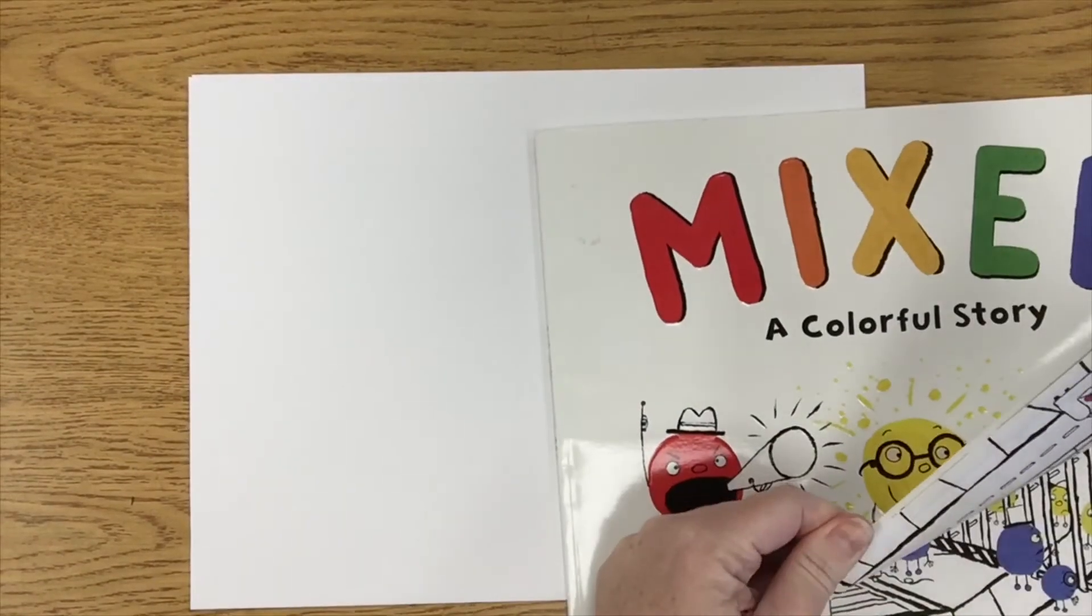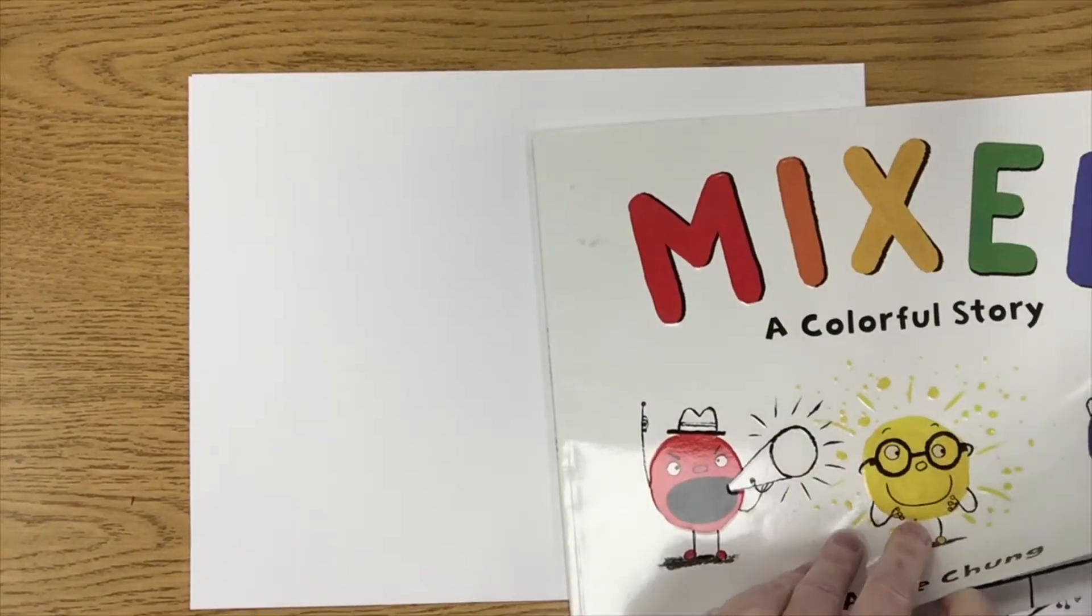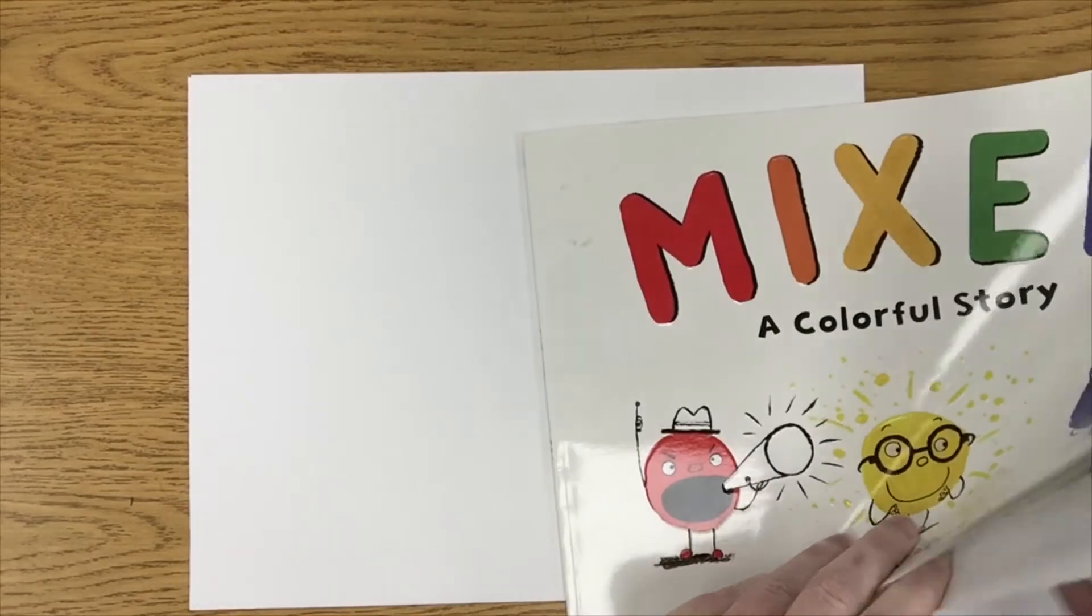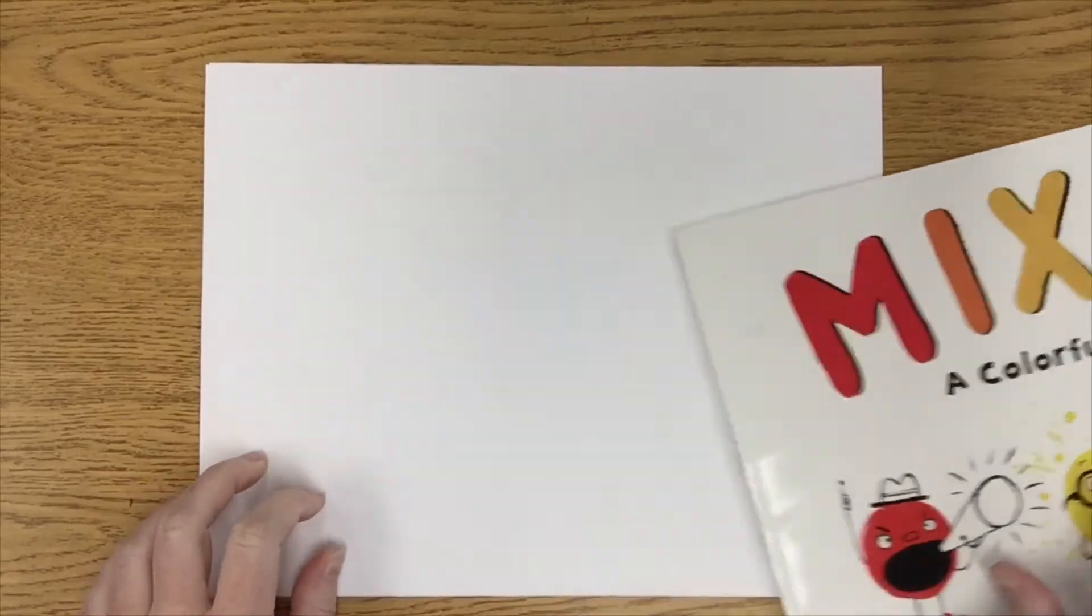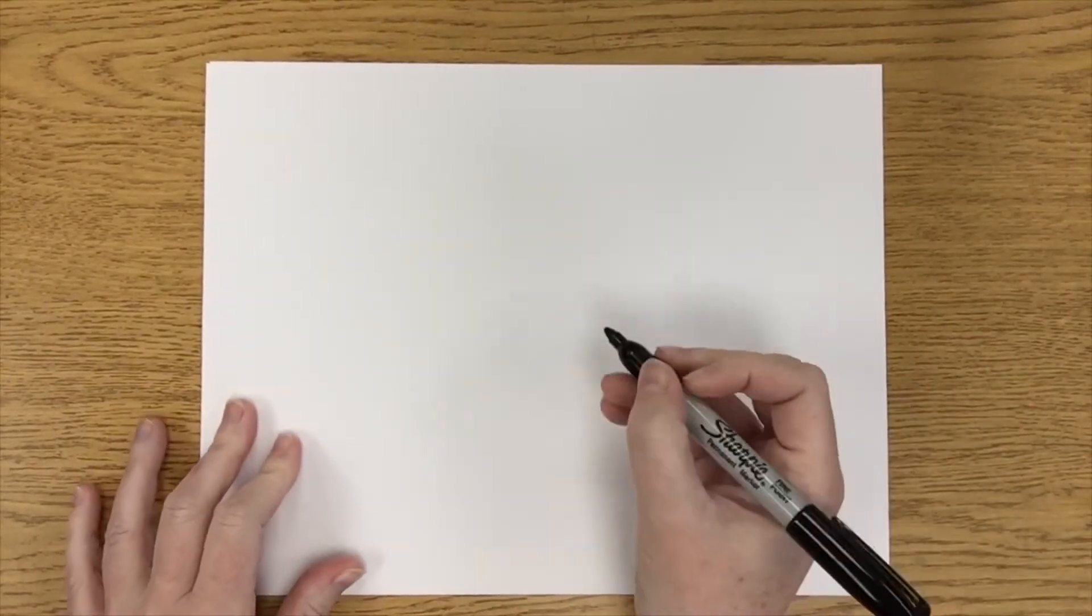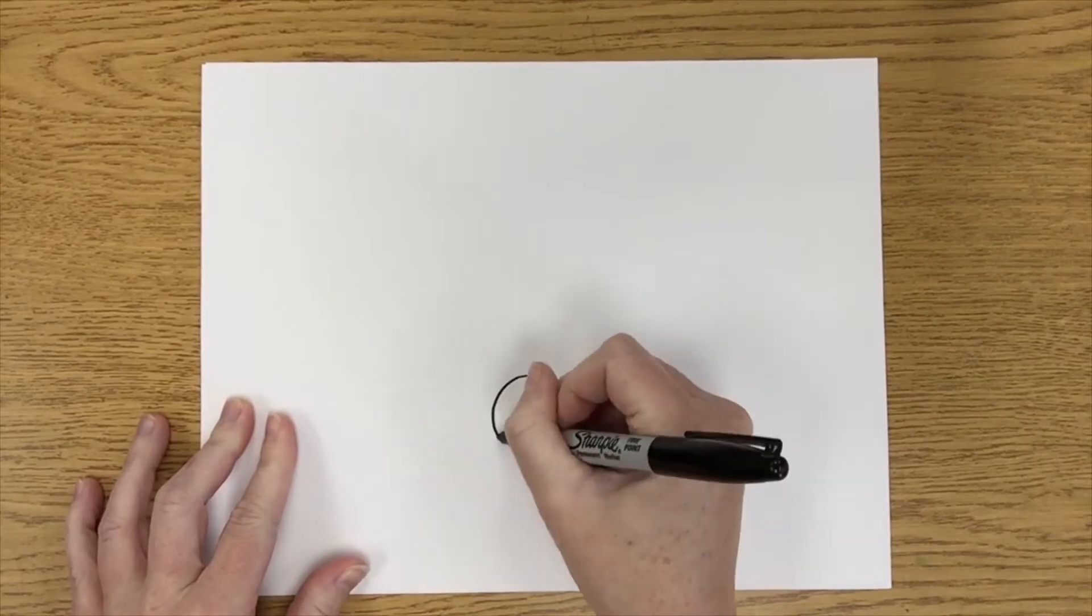All right, so the point of this activity is that we're going to take two colors and mix them together like we see in the story. Our two colors mixing together, so I'm going to start by drawing the little one that they're mixing together. So I'm just going to draw a circle.